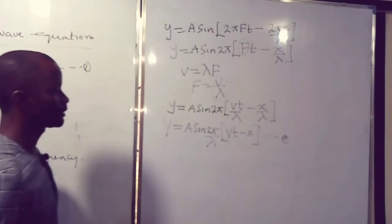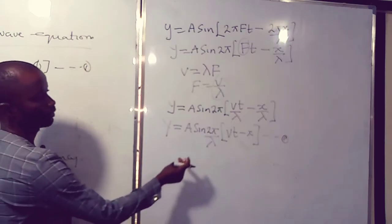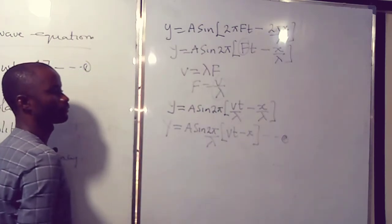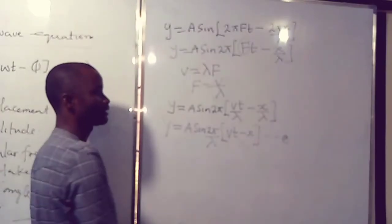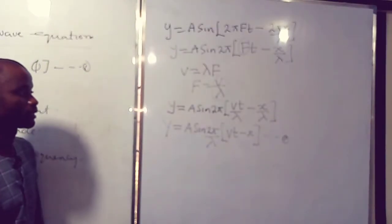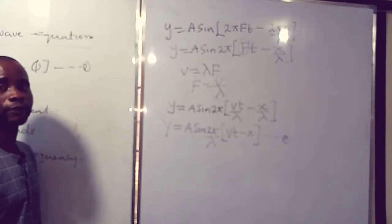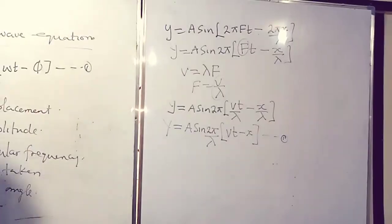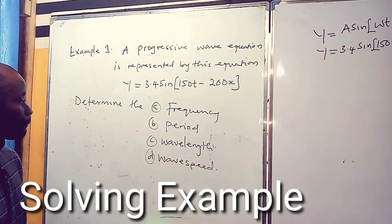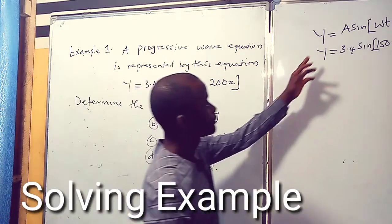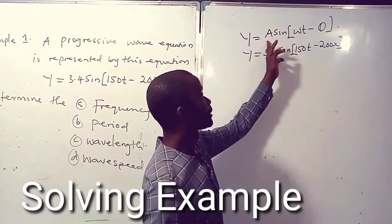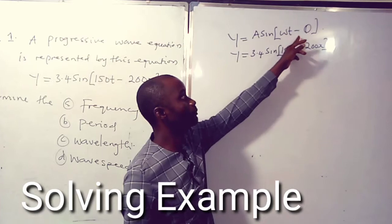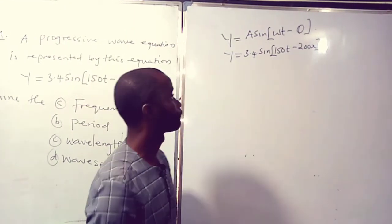Now from this equation, V is the wave speed, and x is the horizontal displacement of the wave particle. Now you compare and contrast this with the original equation of the progressive wave: y equal to A sine open bracket ωt minus φ.